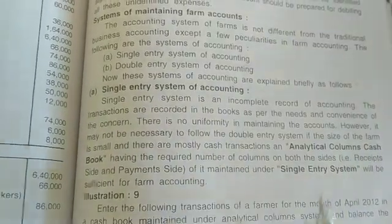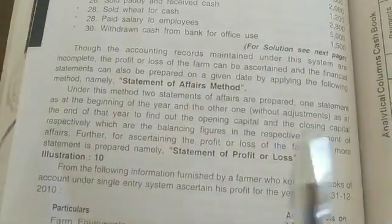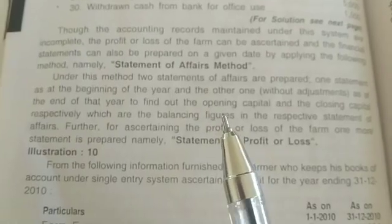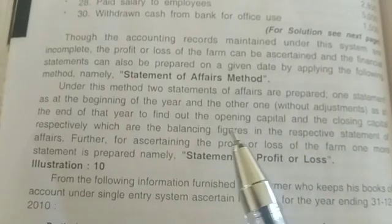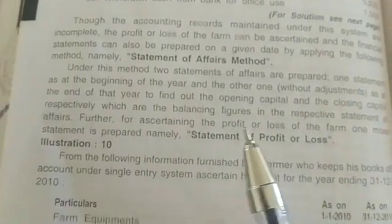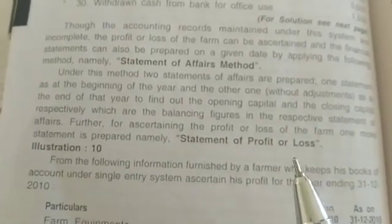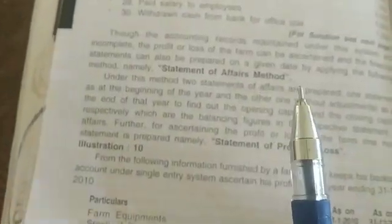I will explain a problem related to analytical column in cash book. And also to find out the profit and loss we are going to use another method, that is the statement of affairs method. In that we are going to prepare the statement of affairs at the beginning and statement of affairs at the end. And also statement of profit and loss and revised statement of affairs — these four things are going to be maintained. So today one problem which is related to analytical cash book, I will explain here.